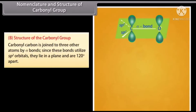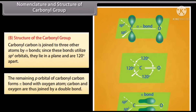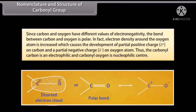The carbonyl carbon is joined to three other atoms by sigma bonds. Since these bonds utilize sp2 orbitals, they lie in a plane and are 120 degrees apart. The remaining p orbital of the carbonyl carbon forms a pi bond with the oxygen atom, so carbon and oxygen are joined by a double bond. Since carbon and oxygen have different electronegativities, the bond is polar — electron density around oxygen is increased, causing a partial positive charge on carbon and a partial negative charge on oxygen. Thus, the carbonyl carbon is an electrophilic center and carbonyl oxygen is a nucleophilic center.